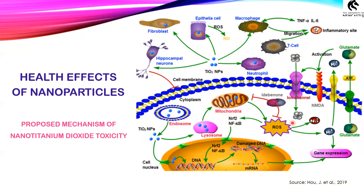Next is nano titanium dioxide. Nano titanium dioxide on entering the cell can affect the lysosomes and mitochondria. When lysosomes are affected, it can lead to autophagy — the same process we saw with nano silica — where the cell eats itself. When mitochondria is affected, ROS — reactive oxygen species — can be formed, which can lead to inflammation. Nano titanium dioxide also leads to an excessive release of glutamate into the extracellular region, and this can lead to neurodegenerative diseases like Alzheimer's disease, Parkinson's disease, etc.